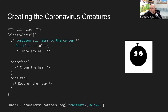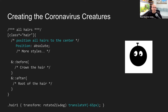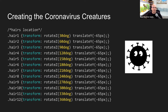The first hair gets a transform with rotate-z of 0 degrees and translate-y of -65px, taking it from center to the top. The second hair gets rotate-z of 30 degrees and then translate-y of -65px, so it goes to the top but slightly to the right. The order of values in the transform property is very important because they affect each other. In this way I located all 12 hairs, each with a different rotate-z value and the same translate-y value.